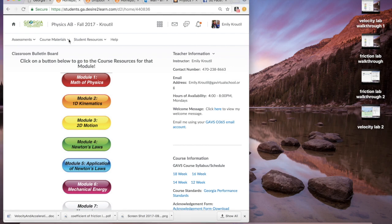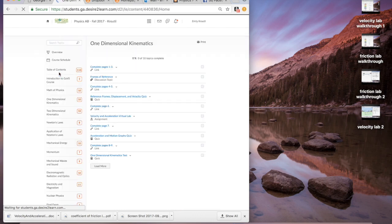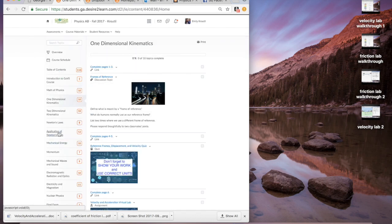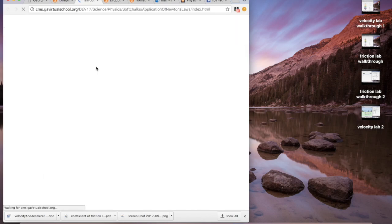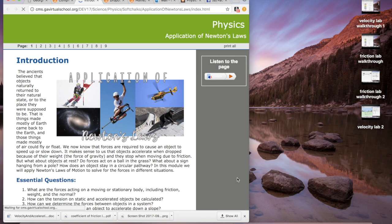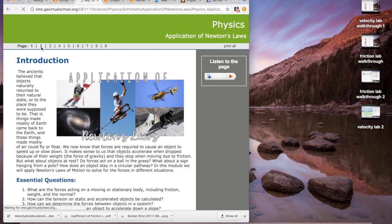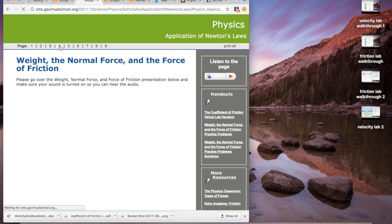So the first thing I'm going to do is I'm going to go find the lab. So I'm going to click on course materials, I'm going to go to content. This is in our application of Newton's Laws unit, so I'm going to click on that and then I'm going to click on one through three and then I'm going to search for this sidebar until I find Newton's Laws of Universal Gravitation.